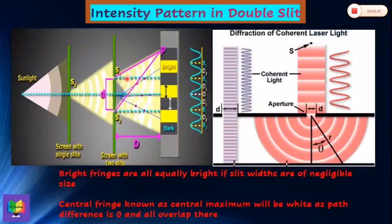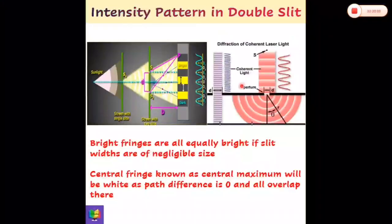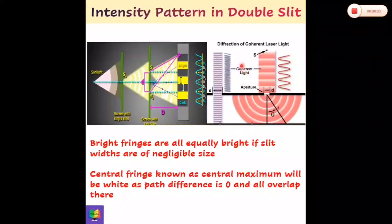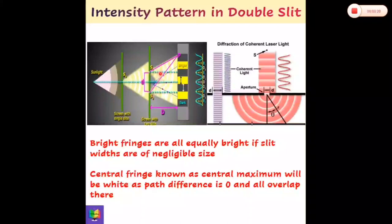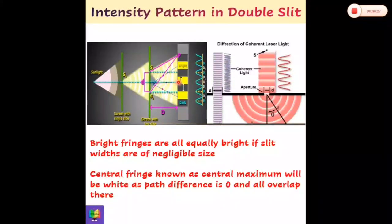Now, diffraction using different light sources. This picture is that of diffraction of coherent laser light — see the intensity distribution, maxima of equal intensity are observed. This is sunlight: after passing through a single slit, the diffracted light passes through two slits and we obtain alternate bright and dark bands. That is, after diffraction, interference takes place and we get bright and dark bands due to constructive and destructive interference. Bright fringes are all equally bright if slit widths are negligible.